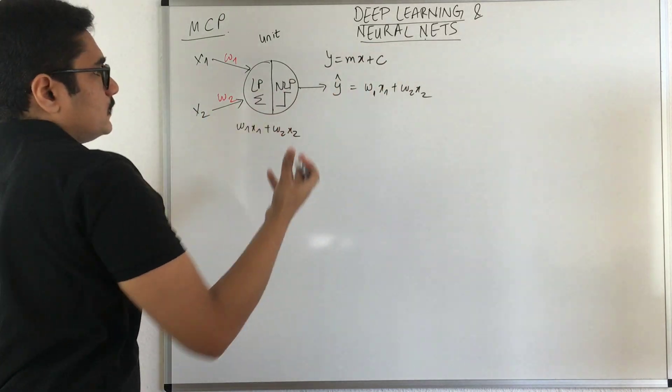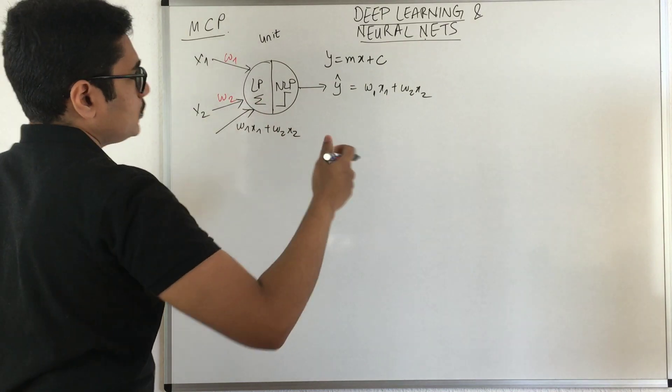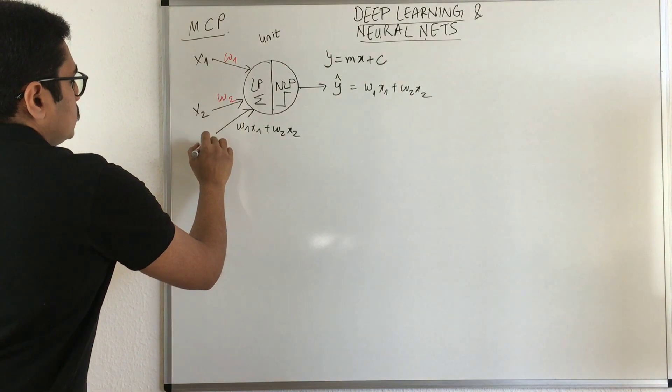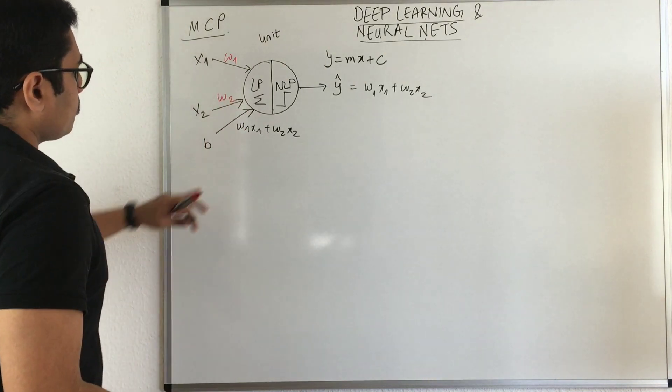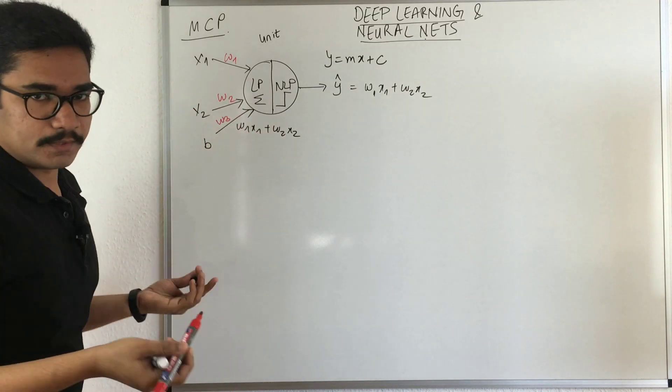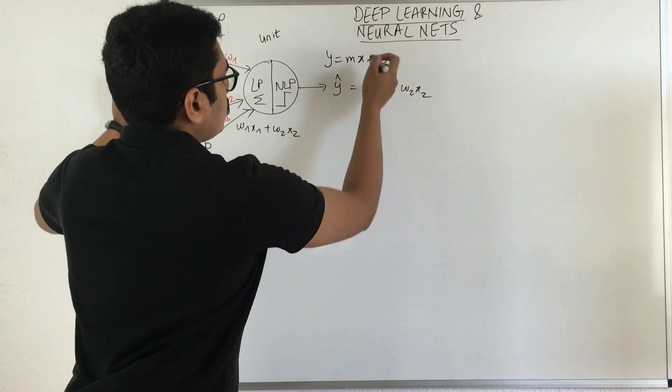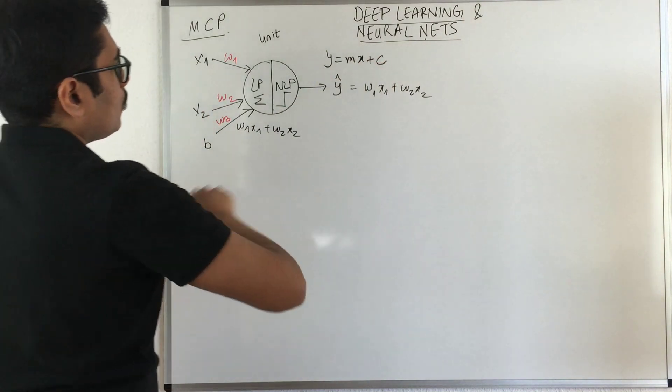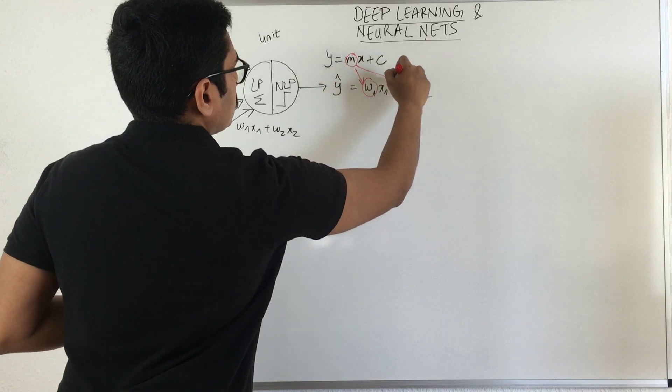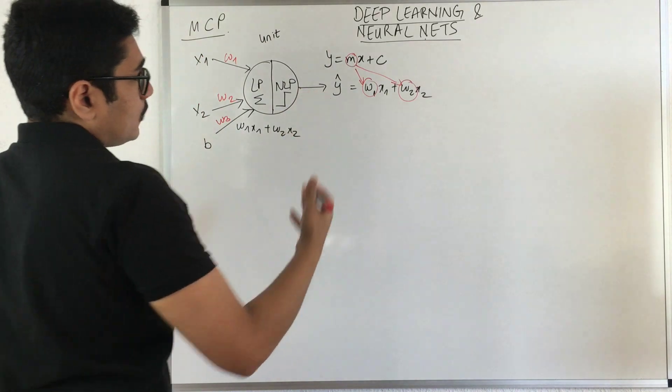This is essentially Y equals MX plus C. C in this case is considered as a bias, an external configuration we apply. Say you have B0 or B, and with bias you also have some weight W3. Your X remains the same, but your M is replaced by these W's. These are essentially your weights or coefficients. In linear regression, those are called slopes, but in neural networks, they're called weights.